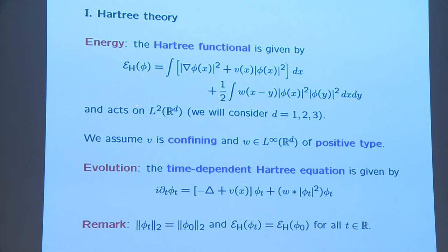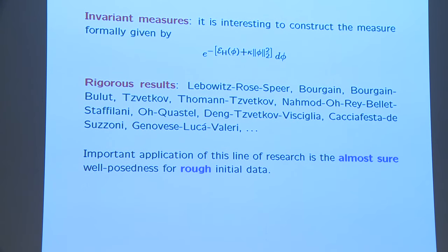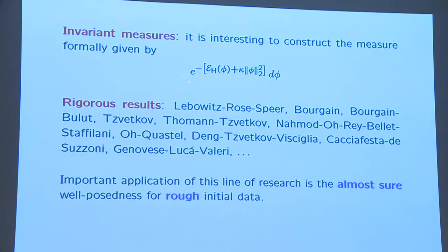If you take the variation of the energy with respect to phi or phi-bar, you get a time-dependent Hamiltonian equation, the time-dependent Hartree equation. On the left-hand side you have the time derivative of phi at time t times the complex number i, and on the right you have the Laplacian acting on phi, the potential, and the interaction potential given by a convolution. The time-dependent Hartree equation preserves the mass, the L² norm, and the energy.